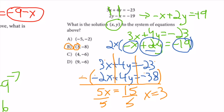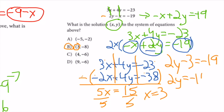For completeness, I plug x = 3 back into one of the equations — I'll use the second. 2y - 3 = -19. Adding 3: 2y = -16. Dividing by 2: y = -8.